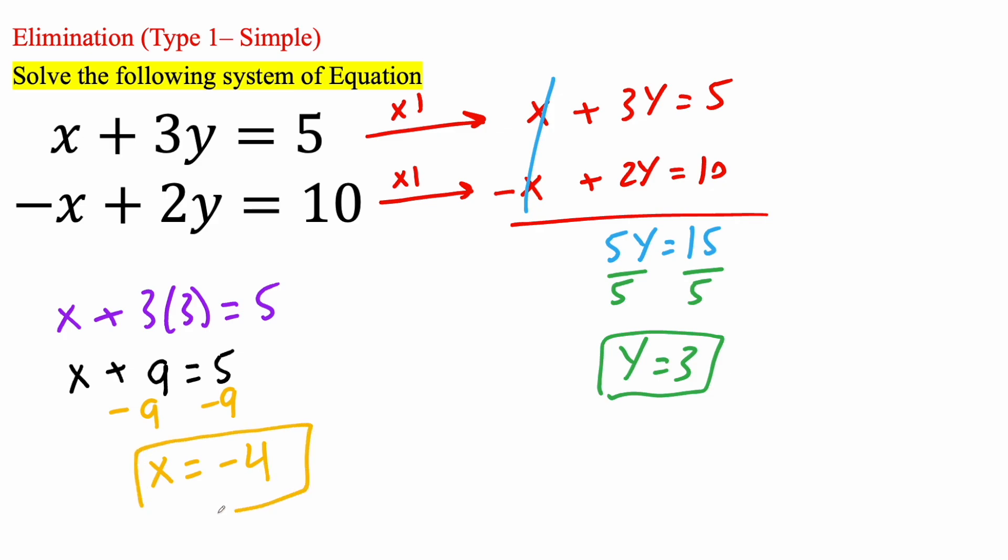So we have both the x and the y. Now we can always check. We can plug it back in into both equations. So we said x is negative 4. So negative 4 plus 3 times 3 is 9. Negative 4 plus 9 is 5. And now we'll try the second one.